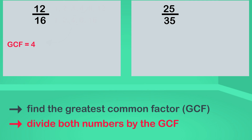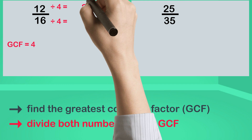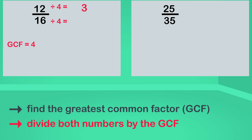Step two: divide the numerator and the denominator by the greatest common factor. Twelve divided by four and sixteen divided by four. Twelve divided by four is three. Sixteen divided by four is four. Twelve-sixteenths reduced to its simplest form is three-quarters.